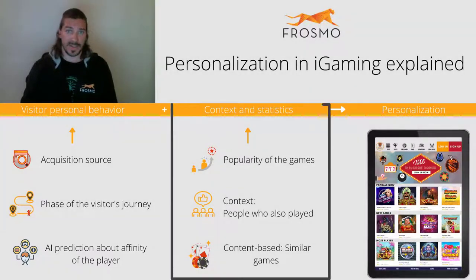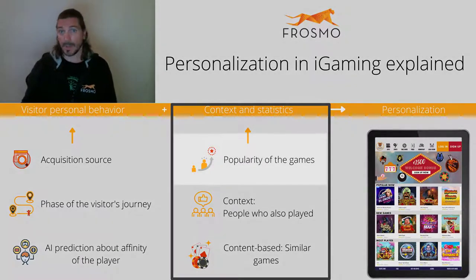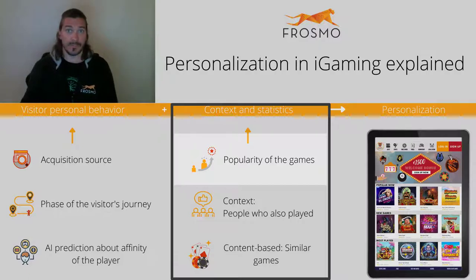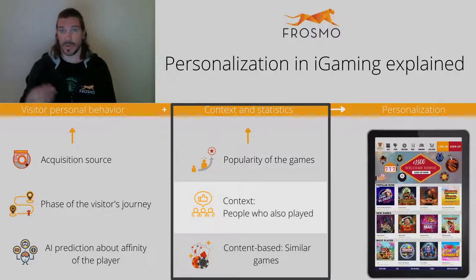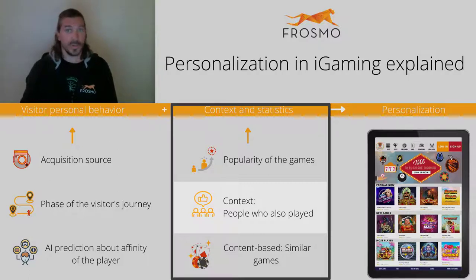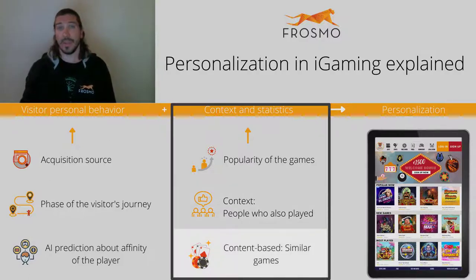Context and statistics examples are the popularity or the trending in a category. Context examples can be that those who enjoy these games also try these games, or content-based like similar game themes or types.